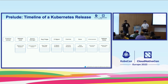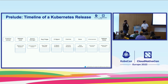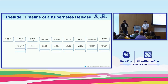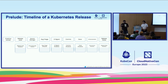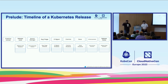The release lead is basically the coordinator for everyone. The branch manager cuts tags. The bug triage team does triage. The CI signal team takes care of our CI. The comms team writes the blogs you see at the end of the release — the feature blog, the release blog. The docs team handles all the docs that users consume. The enhancements team ensures all features going into the release have requirements set. And the release notes team prunes the changelog into the release notes you see at the end of a release.